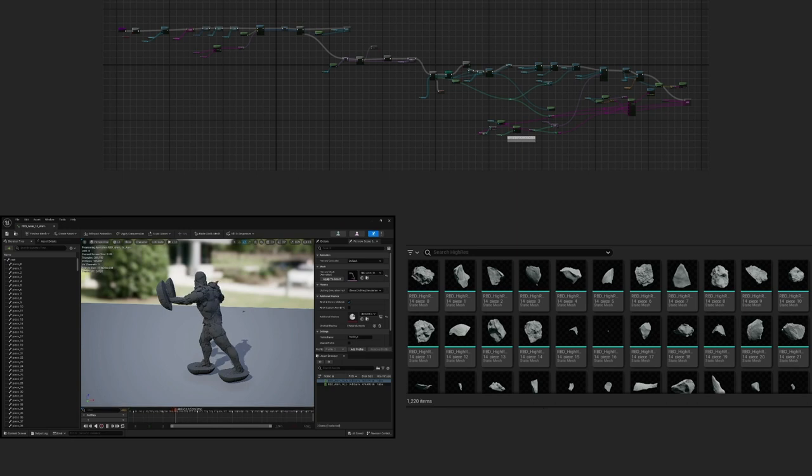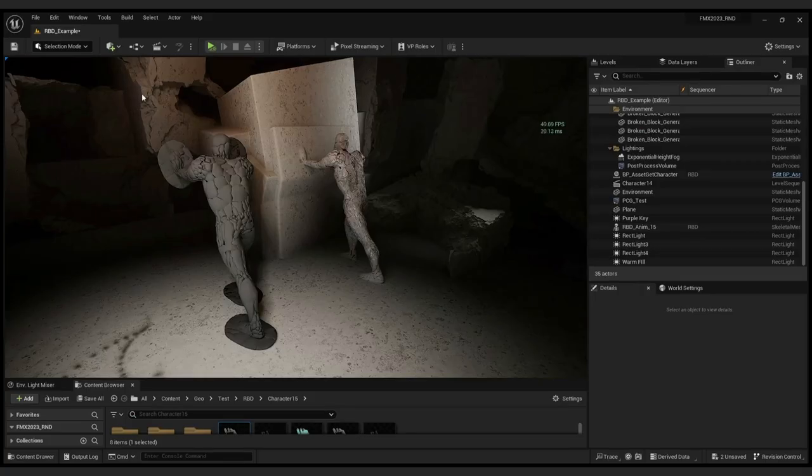In Unreal we would then use this blueprint that I created to match the Nanite pieces to that low-res FBX of Jakob's fracture. The way it's doing this is it goes through all the high-res fractured pieces, gets the name of them, matches it to the name of the right bone, and that way it will be correct. If it looks right, it should be like this.